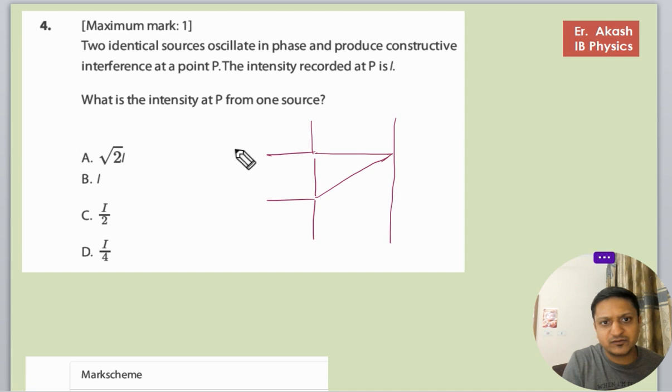And there is source one, source two. These are both identical sources. So we know that the intensity is directly proportional to the amplitude squared. Suppose the amplitude is A, amplitude is A also because they are identical. Both the sources are identical, so when there will be a constructive interference...